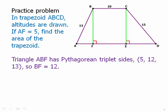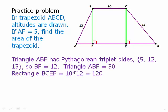That means that CE also equals 12. So we can find the area of the triangle ABF, and that has to be 1/2 times 5 times 12. 5 times 6 is 30. We can also find the area of the rectangle. 10 times 12 is 120.